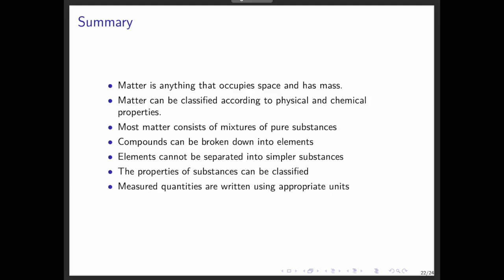To conclude, matter is anything that occupies space and has mass. Matter can be classified based on physical and chemical properties. Most matter exists as mixtures of pure substances, which can be homogeneous or heterogeneous. Compounds can be broken down into elements by chemical reactions, but elements cannot be separated further by chemical means. Substances have properties that are either physical or chemical. And finally, measurements in chemistry follow the International System of Units.